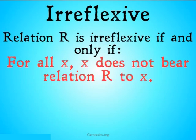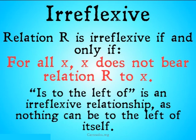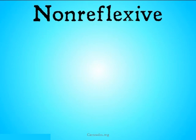Irreflexive relations: relation R is irreflexive if and only if, for all X, X does not bear relation R to itself. 'Is to the left of' is an irreflexive relation, as nothing can be to the left of itself.